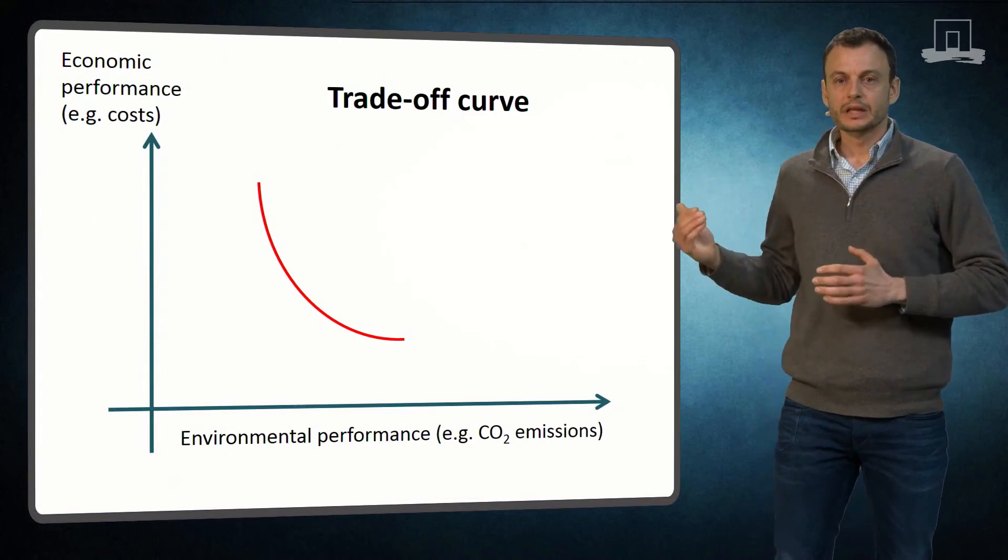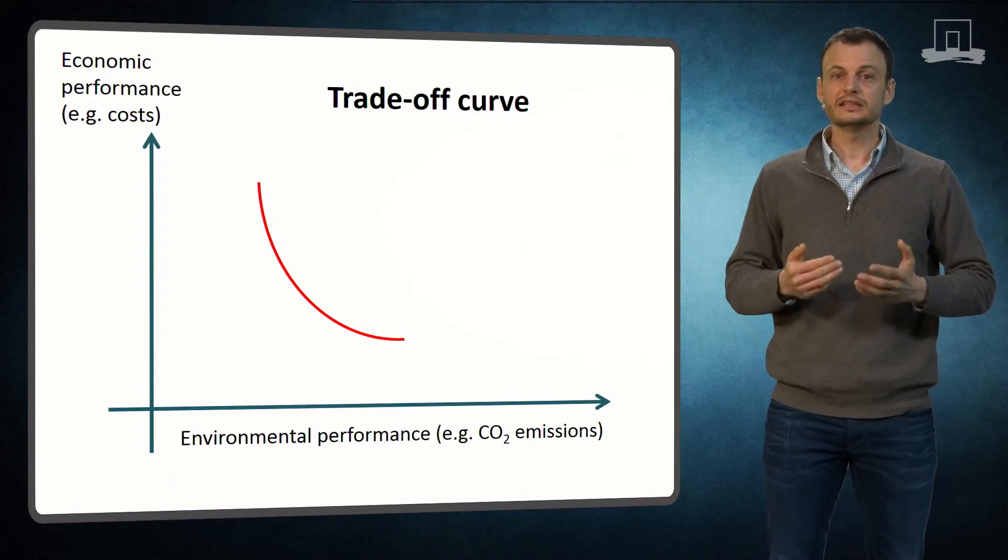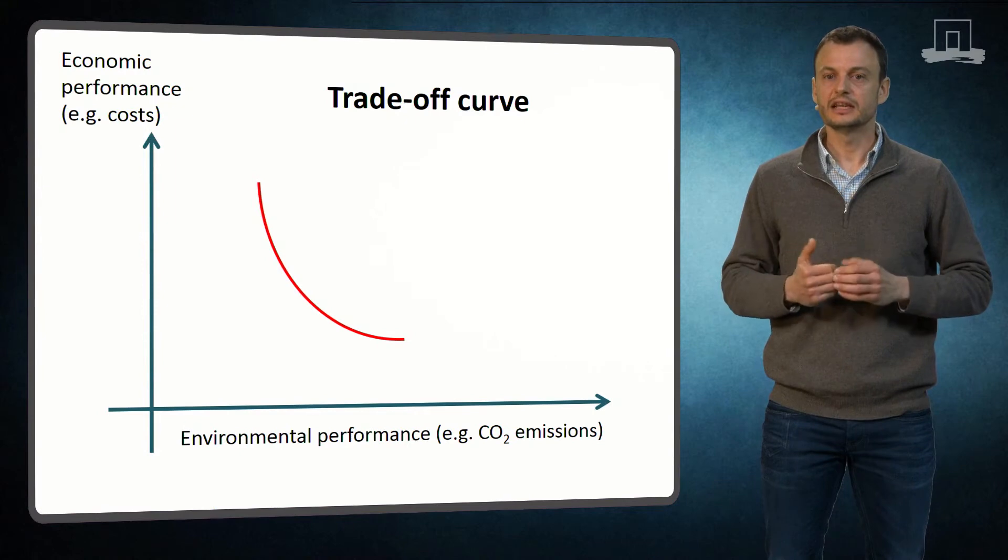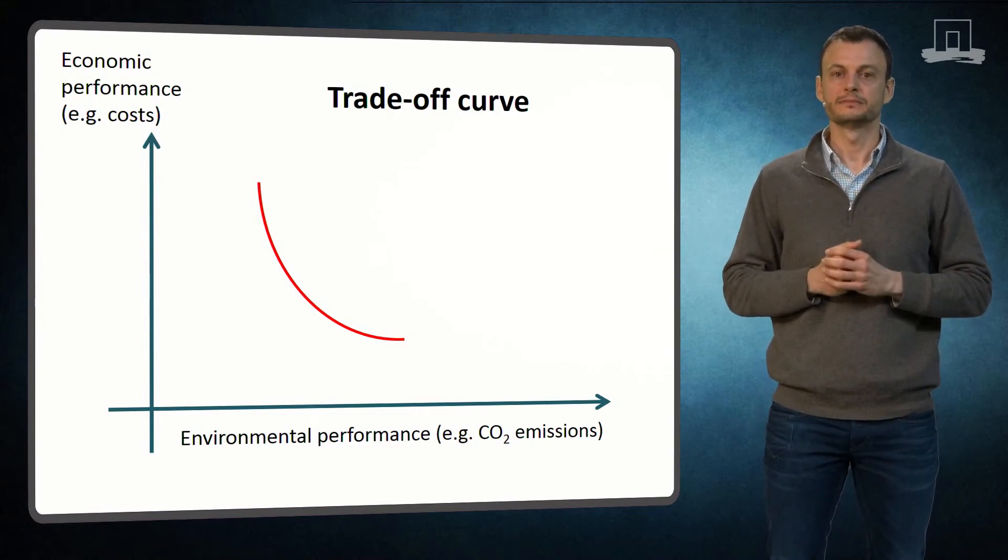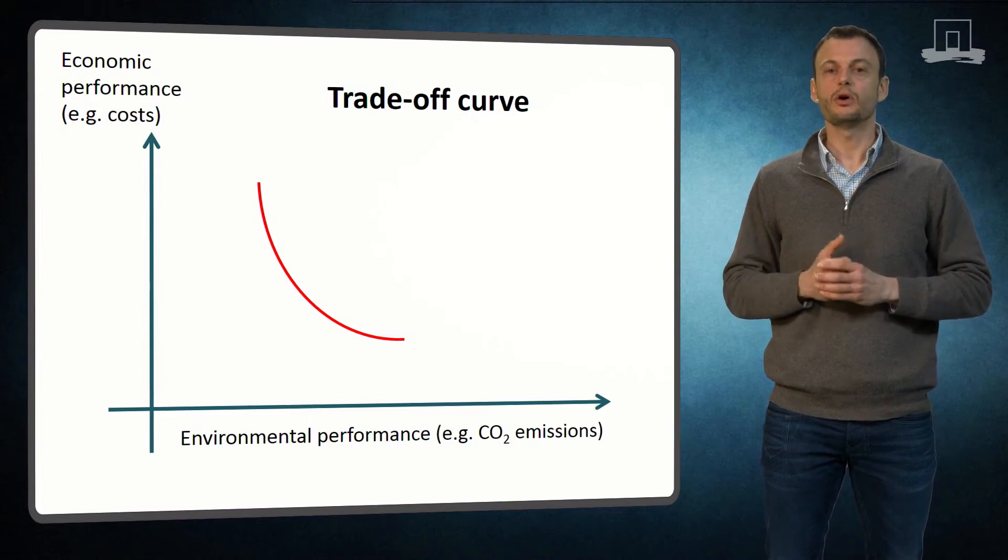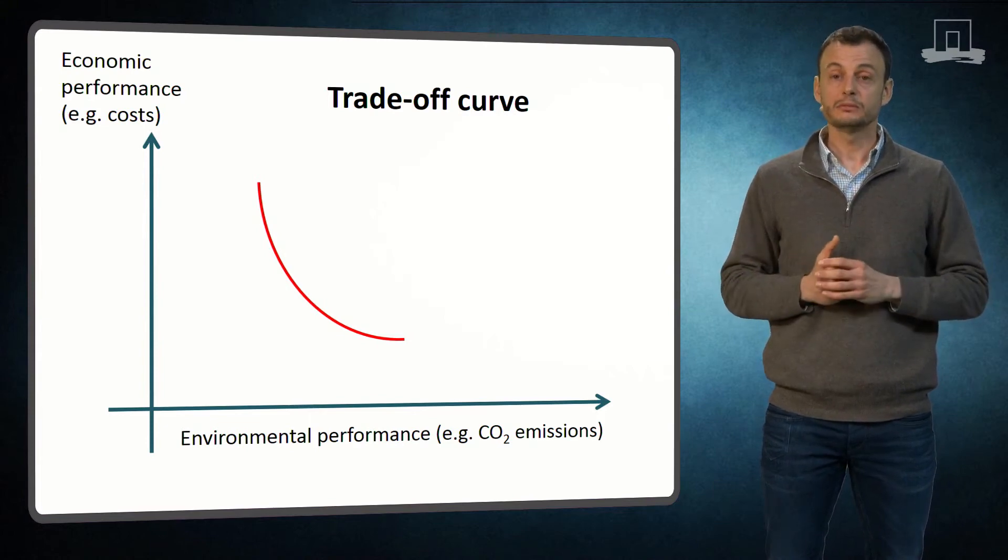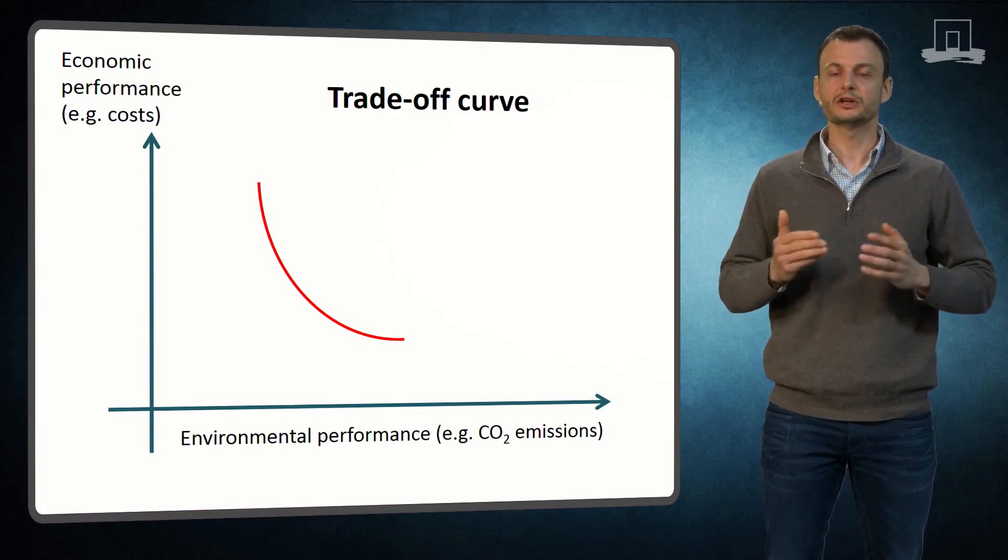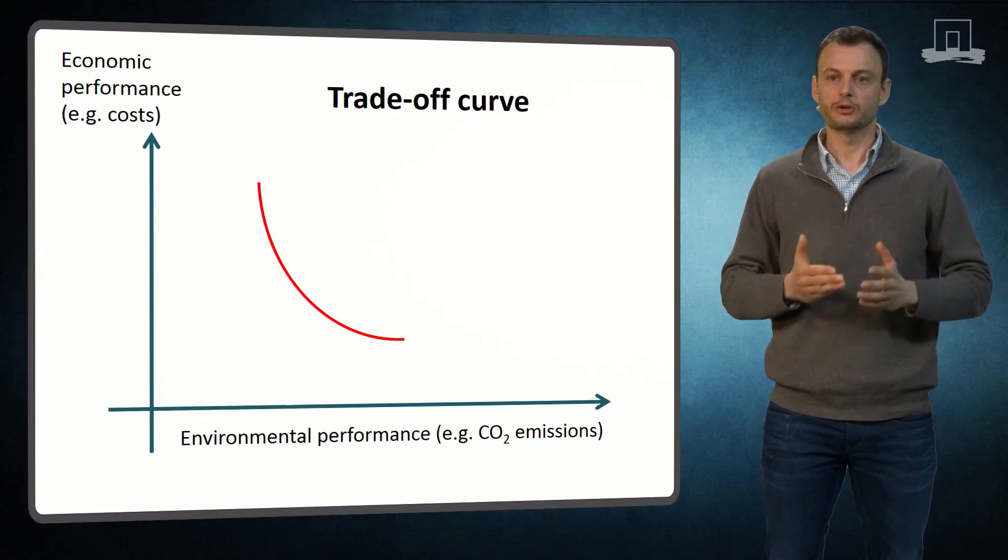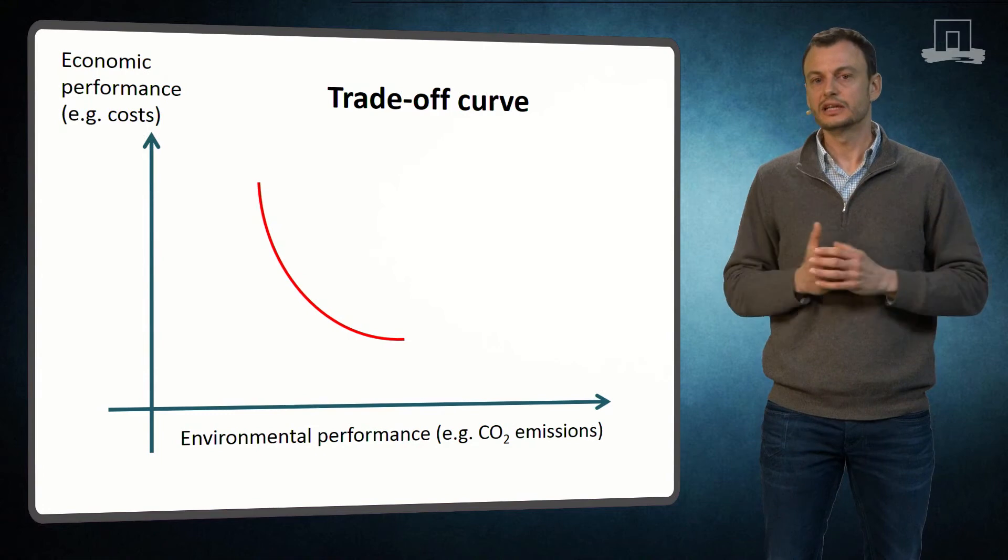Here you see an example of a trade-off curve. In this case, the trade-off for a certain supply chain is between the economic performance and the environmental performance. The curve indicates all the efficient solutions that are feasible from a technical point of view. This means that solutions with a better combination of economic and environmental performance do not actually exist.